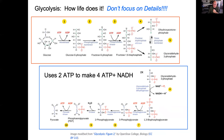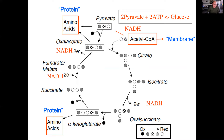Pyruvate sits at the threshold of the TCA cycle, which is the core of all metabolism. When it runs in an oxidative sense — moving clockwise — it produces large amounts of NADH, generating a huge amount of ATP starting from one mole of glucose. It is also the center of metabolic pathways leading to all amino acids, membrane lipids, purines, pyrimidines — everything that is life comes out of the TCA cycle.